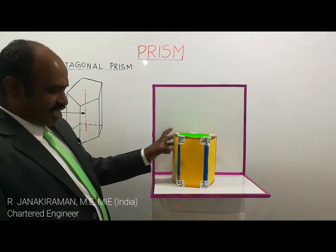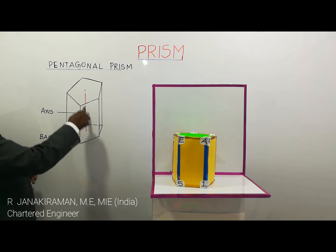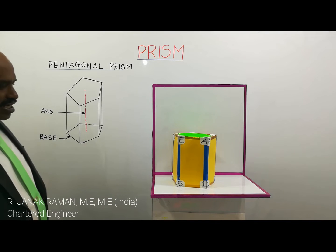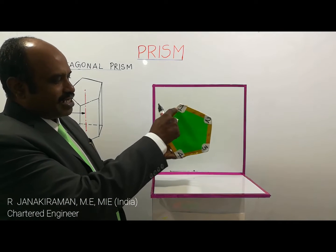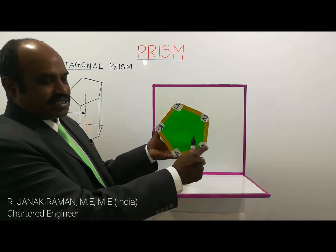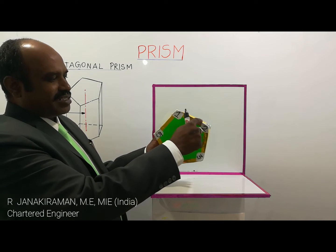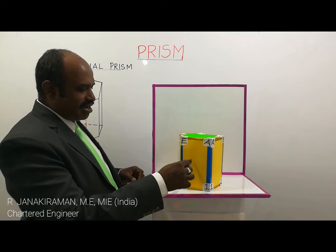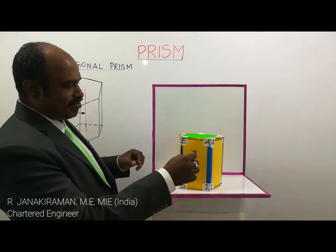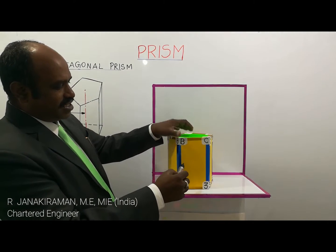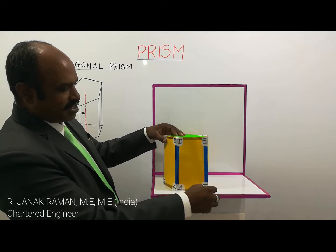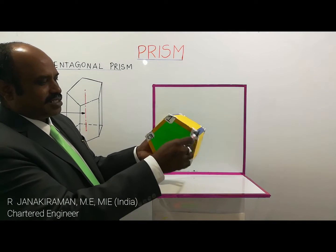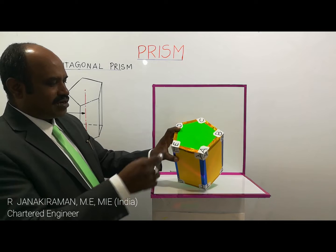The line joining the center of the base and the center of the top surface is called the axis, shown in this diagram. The gold color edges are called base edges or base sides. Having a regular size — all equal — it is a regular pentagonal prism. The yellow color is called a face of the prism; it has 5 faces, all of rectangular shape. It has 5 corners on its base and the top surface also has 5 corners.